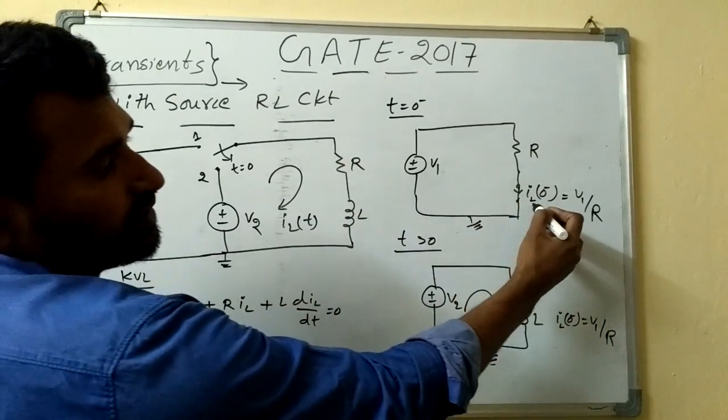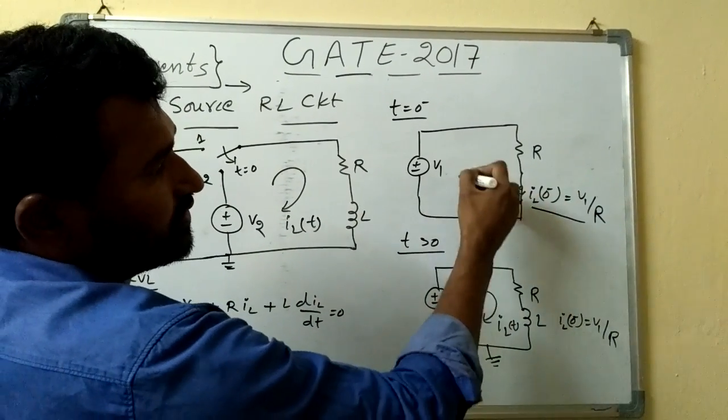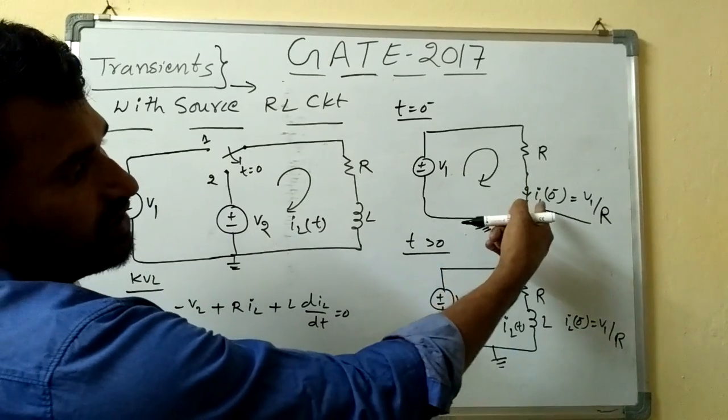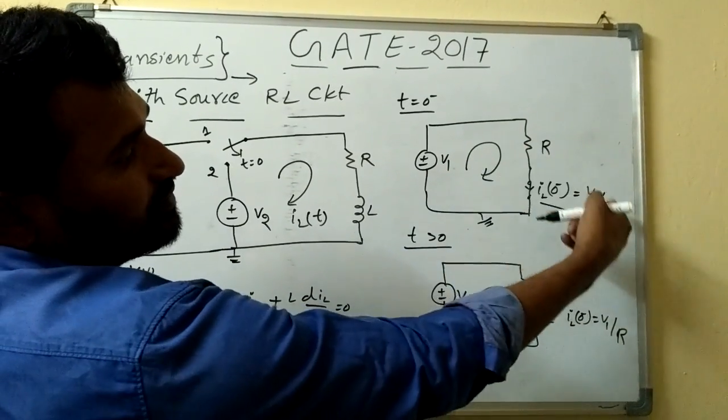Now, the inductor again will become like a short circuit and we can find the current flowing through this, that is, iL of 0 minus is equal to v1 by r.